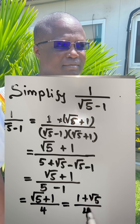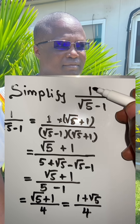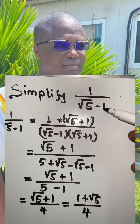So this expression, 1 plus root 5 over 4, is the simpler form of 1 over root 5 minus 1. Thank you.